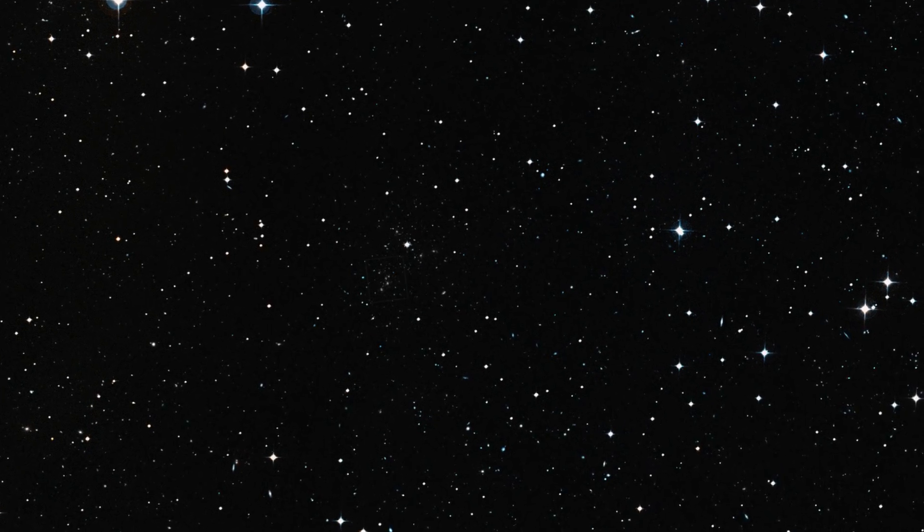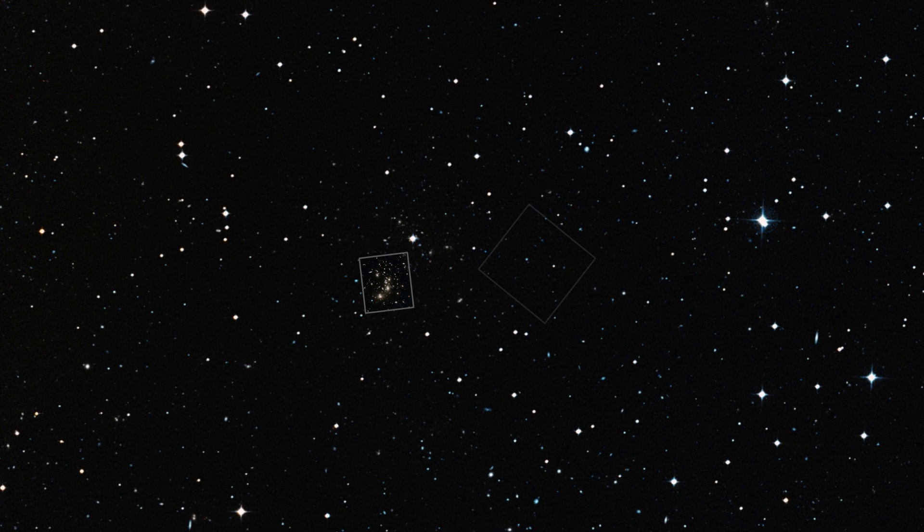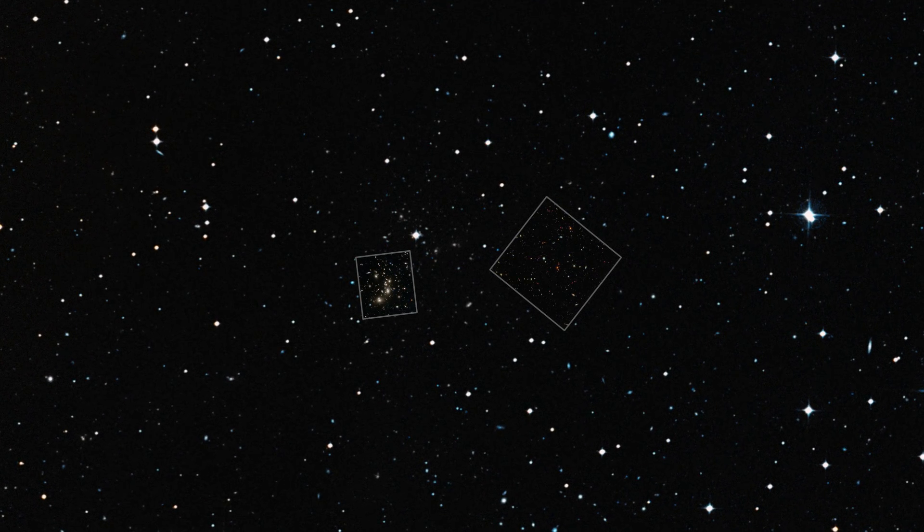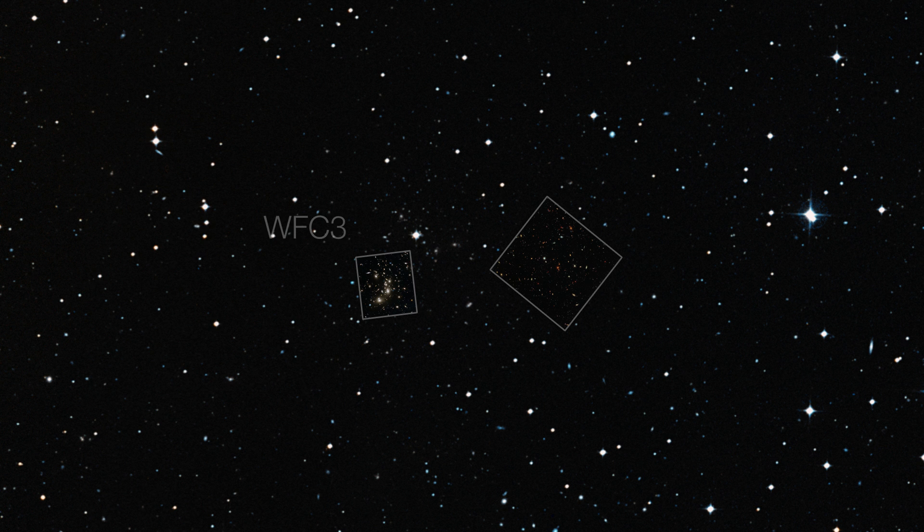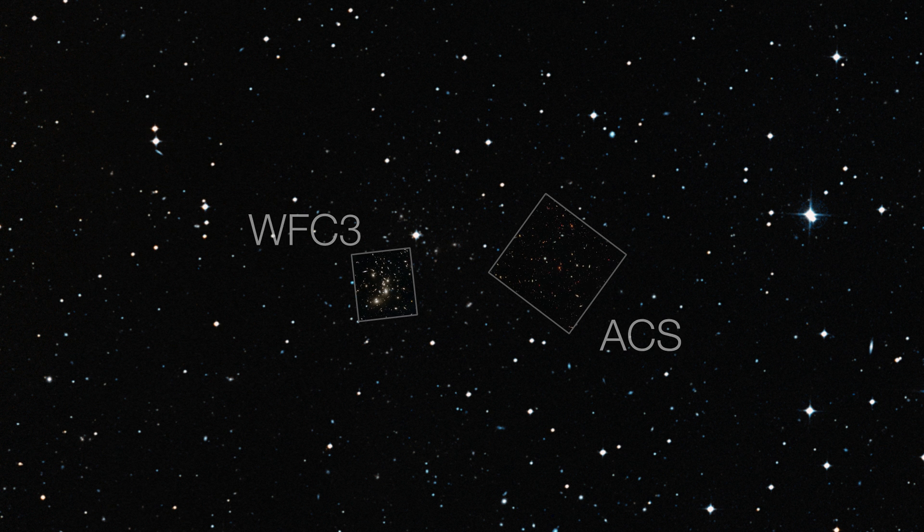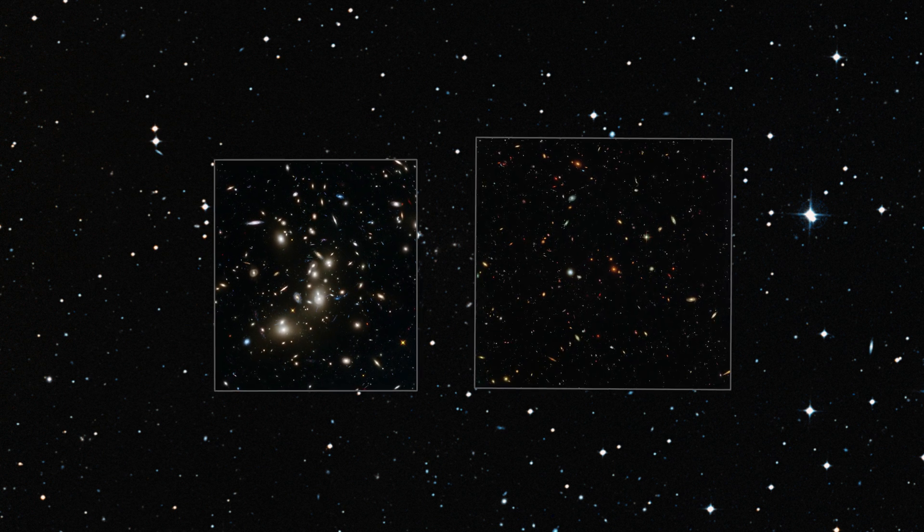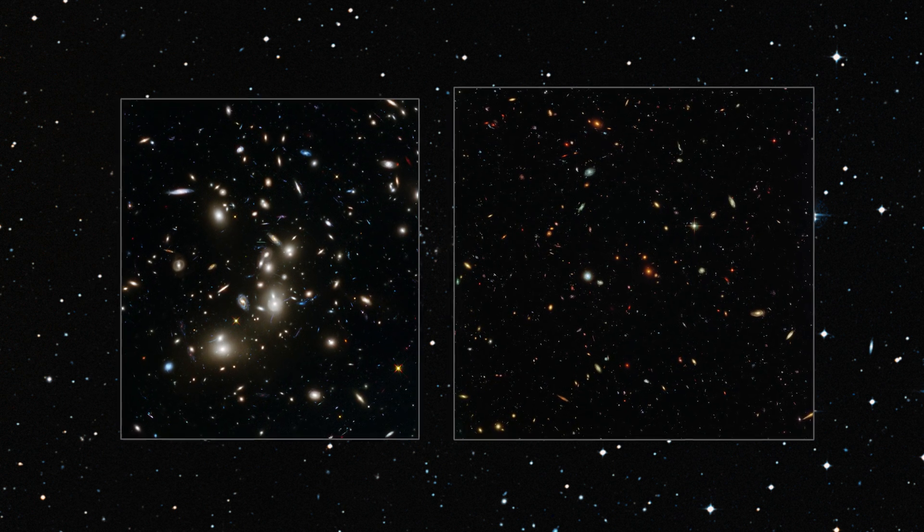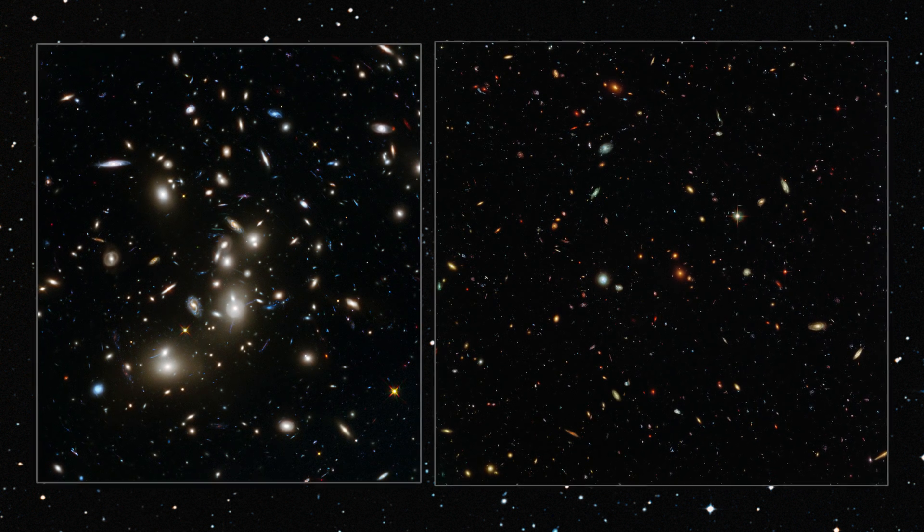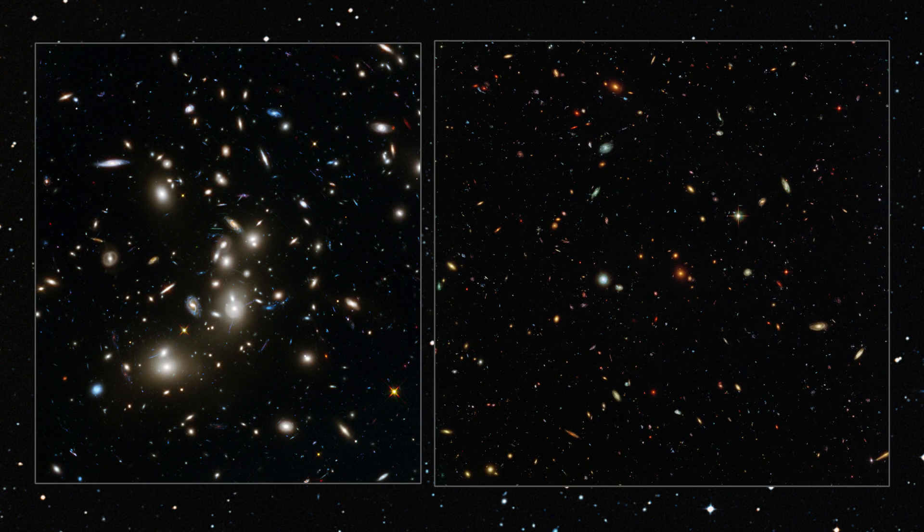As well as observing the clusters, Hubble puts its multiple cameras to use during the cluster observations by also observing six parallel fields, regions near the galaxy clusters. While these adjacent images cannot be used for gravitational lensing, Hubble uses them to perform deep-field observations, and therefore to give astronomers an even larger window on the early universe.